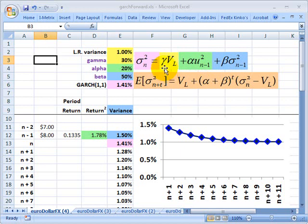The weights do need to sum to 1, so we've got gamma, alpha, and beta. Gamma plus alpha plus beta needs to equal 1.